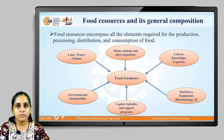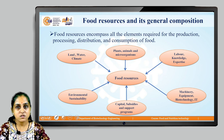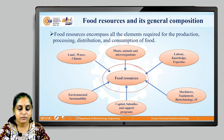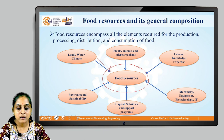Let us now understand food resources and their general composition. Food resources encompasses all the elements required for the production, processing, distribution, and consumption of food. As shown in the diagram, food resources are influenced by land, water, and climate. The food resources themselves are plants, animals, and microorganisms.